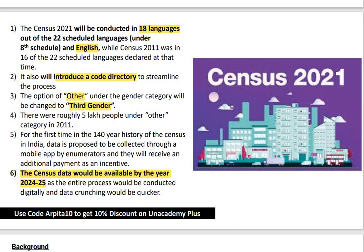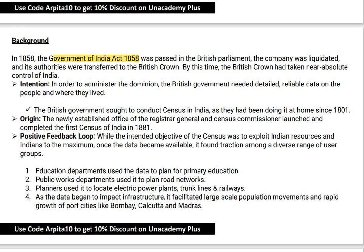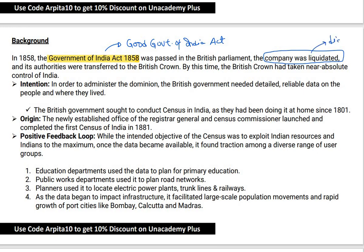When it comes to the historical background of census, we should remember that in 1858, the Government of India Act 1858 was passed — also known as the Good Government Act — following the 1857 Revolt. After this Act was passed, the East India Company was liquidated, meaning it was disbanded and India came under the control of the British Crown.